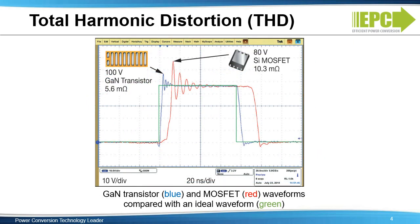Power stages using eGaN FETs come much closer to synthesizing the ideal PWM output compared with power stages using MOSFETs, because the eGaN devices are far superior to silicon MOSFETs in two key characteristics that contribute to the power losses and distortion of the Class D power stage: first, excessive propagation delays, and second, reverse diode conduction. Shown here is a comparison of an ideal waveform in green, a waveform produced by a typical silicon power MOSFET in red, and a waveform produced by an eGaN transistor, shown in blue.